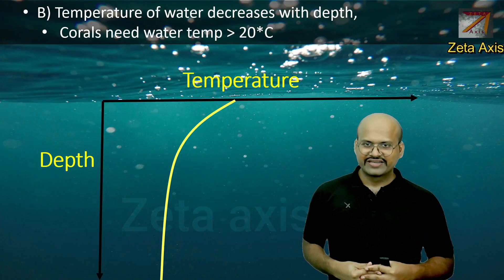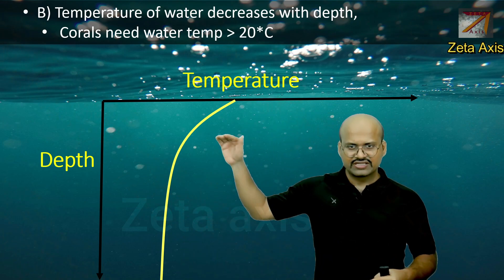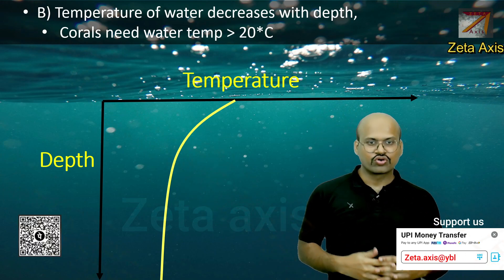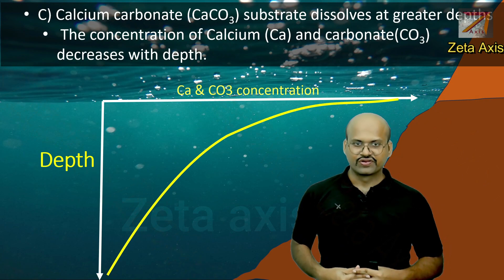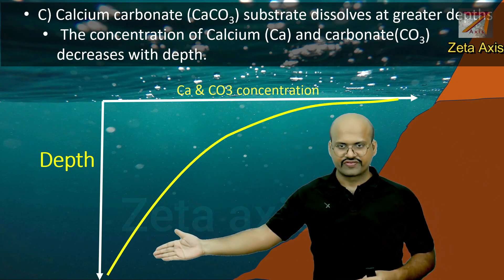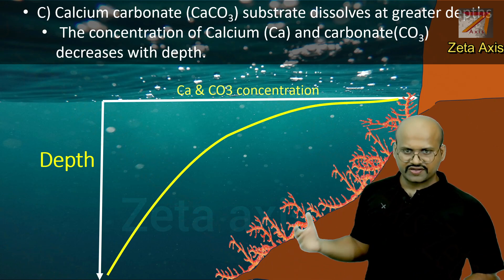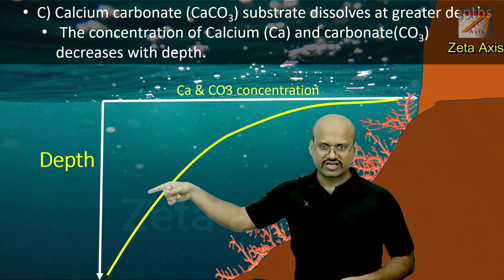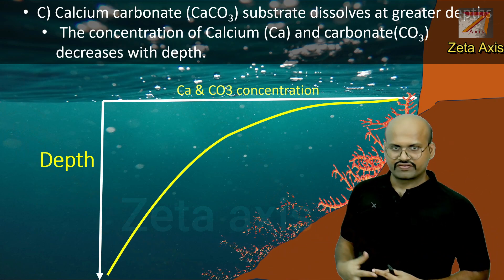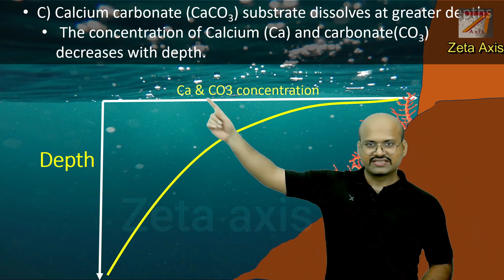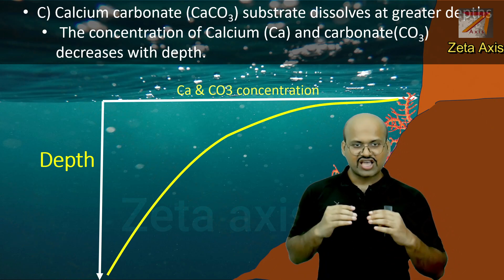The second reason corals are restricted to shallow water is that temperature continuously decreases with depth. After a certain depth the temperature becomes too low for corals to survive. The third reason is that calcium and carbonate concentration also decreases with increasing depth. If corals exist in deeper parts of the ocean, the decrease in calcium carbonate concentration causes their substrate to dissolve. Therefore corals are only found in shallow waters.